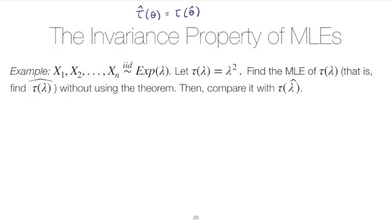The goal of this exercise is to think about that for an exponential distribution. We have an IID sample from an exponential with a function of the rate parameter lambda, namely lambda squared. We found that the MLE of the rate parameter is 1 over x̄. So the invariance property says the MLE of lambda squared is just 1 over x̄ squared.